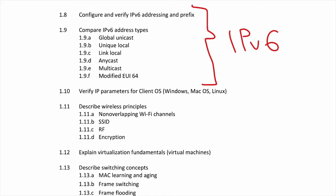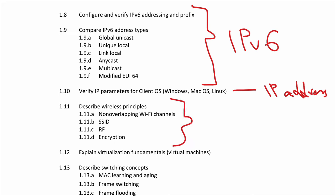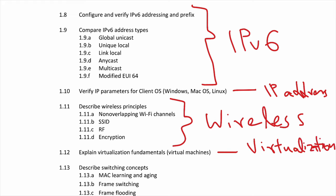We'll cover IPv6 so that when your company is ready to deploy it, you're ready and able to provide that value. Section 1.10 covers how you configure IP addressing on different machines like Windows and Mac. Section 1.11 gets into wireless — radio frequency, SSID, different Wi-Fi channels, the basics of Wi-Fi. Section 1.12 is all about virtualization — this is Virtualization 101 at a high level, but it's actually a very deep topic you could spend 5 to 10 or even 15 years going deep into.